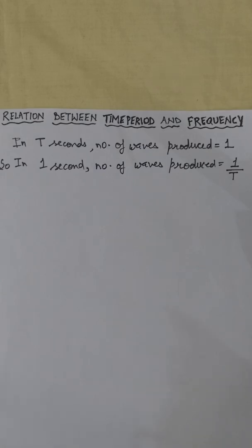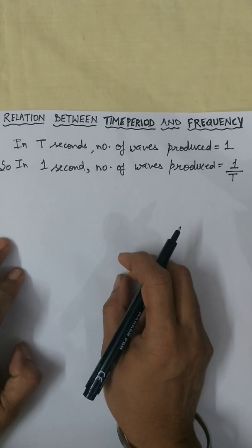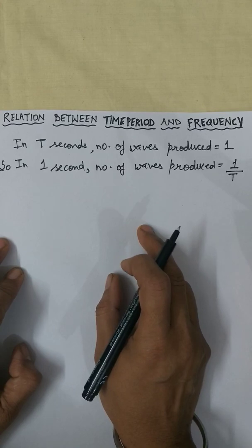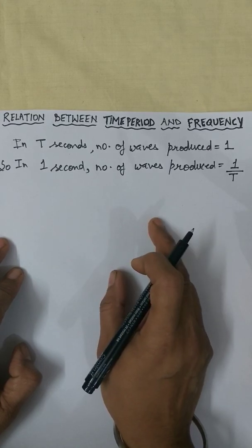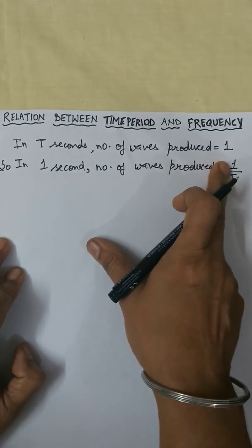Suppose the time period of a wave is T, means in T seconds that complete wave is formed. So we can write that in T seconds, number of waves produced is equal to 1.